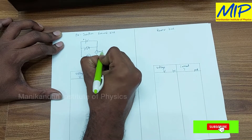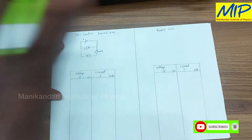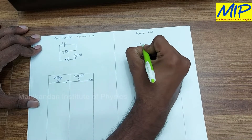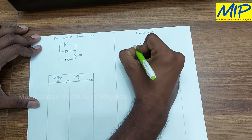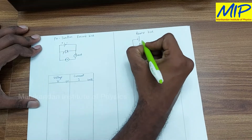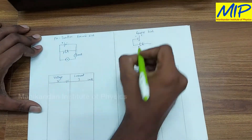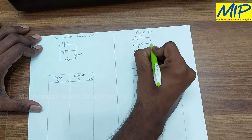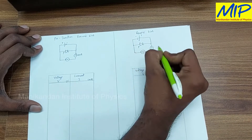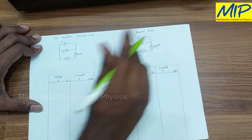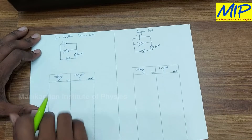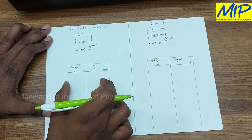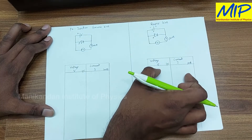In the case of reverse bias, the P-side of the diode is connected with the negative side of the battery — that makes it reverse bias. I will place a voltmeter and an ammeter to measure the amount of current flowing through it. This ammeter operates at the microampere range (10 to the power minus 6), while the milliammeter operates at 10 to the power minus 3. I will take readings in a voltage-versus-current table for both forward and reverse bias.